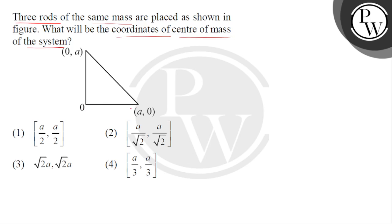So, first of all, we will name these rods. Let this be 1, 2 and 3. And the vertices of triangle are O. O we have given here. Then this is A and this is B.